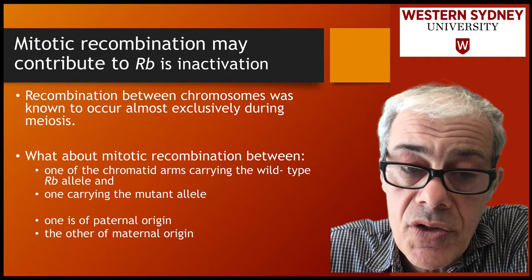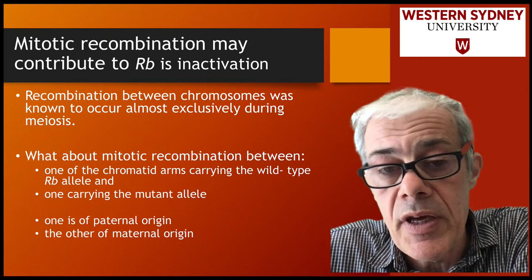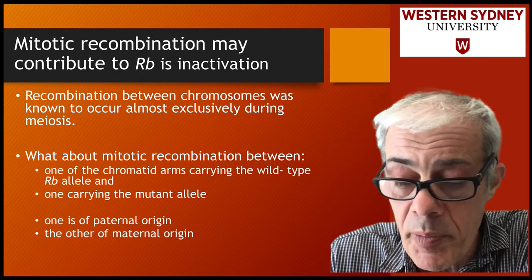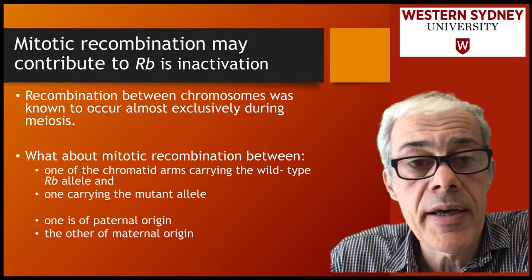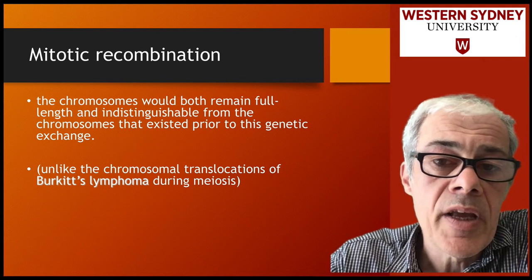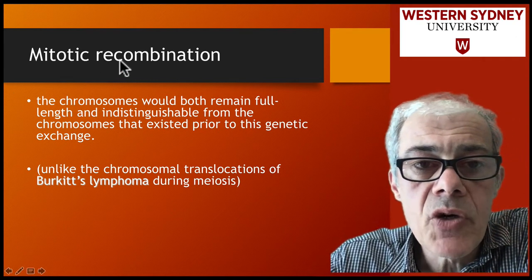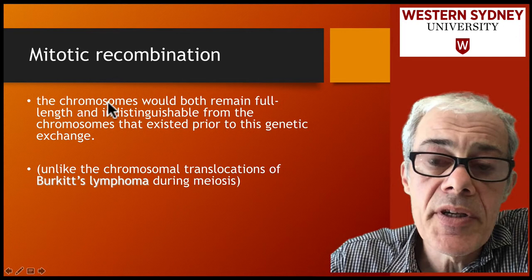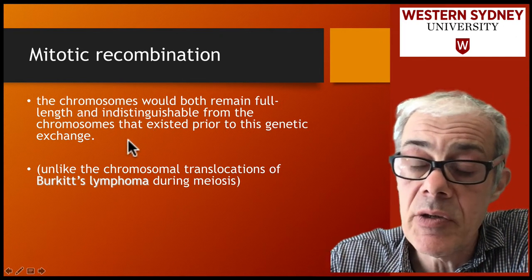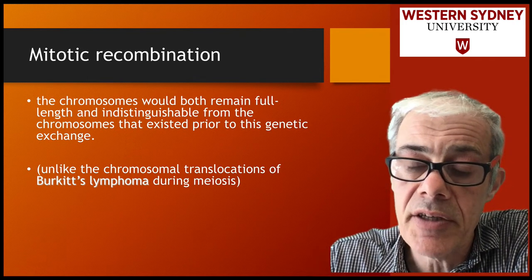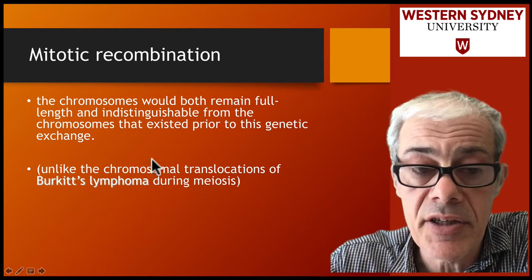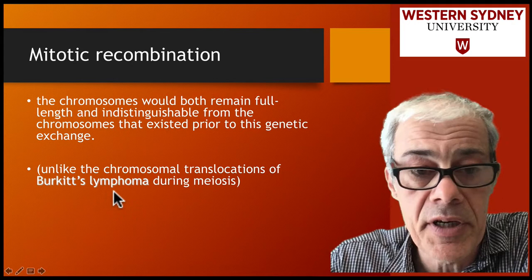How does that lead to loss of the heterozygous form, and how does that lead to both copies of the tumour suppressor being expressed? With mitotic recombination, both copies of the new chromosomes remain full-length and indistinguishable, so you can't see them down the microscope. These weren't picked up as easily as other sorts of chromosomal translocations, such as we've discussed already in Burkitt's lymphoma.